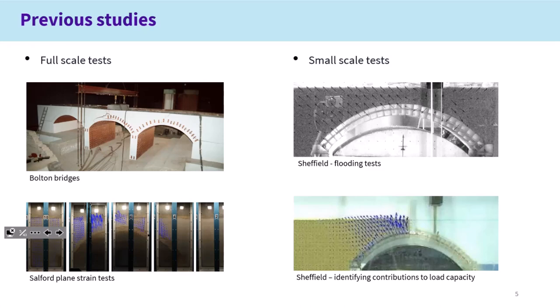We've also been doing quite a lot of small-scale tests. This is a flooded arch bridge — it would be quite hard to do at full scale — and that helps establish and demonstrate that Archimedes' principle does in fact occur, and you lose quite a lot of arch capacity if your bridge is flooded. We can also build different types of models to unpick the mechanisms that contribute to arch capacity: load spreading through the fill, strength of the arch itself, passive resistance of the soil, and dead weight of material.